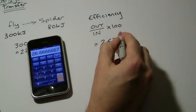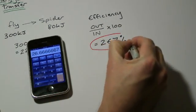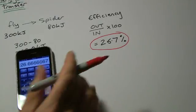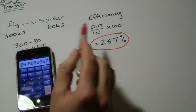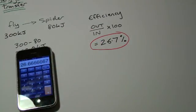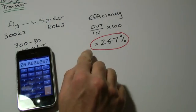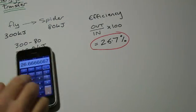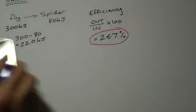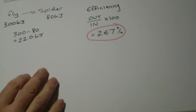Another way to remember it: divide the smaller number by the bigger number and multiply by 100. That represents how efficient the energy transfer has been.